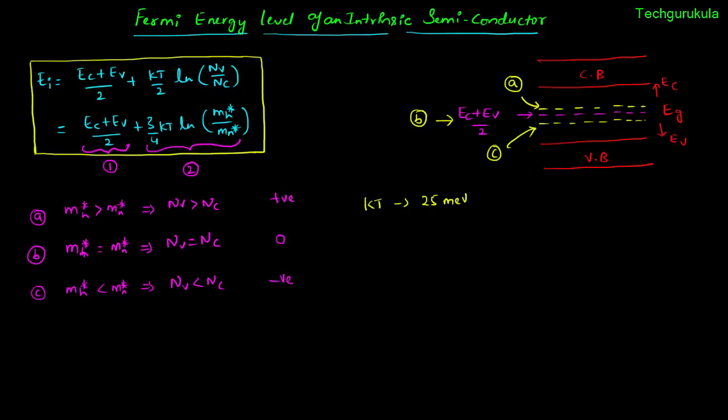For silicon, Case C applies: the effective mass of electron is greater than the effective mass of hole, so the intrinsic Fermi energy level Ei is slightly below the midpoint of the energy band gap. For gallium arsenide, a compound semiconductor, the hole effective mass is greater than the electron effective mass, so Ei is slightly above the midpoint of the energy band gap.